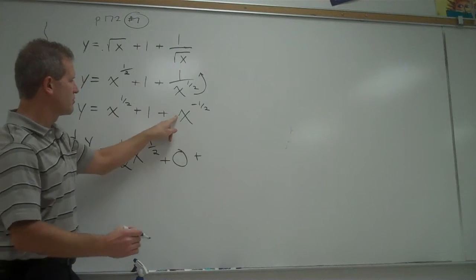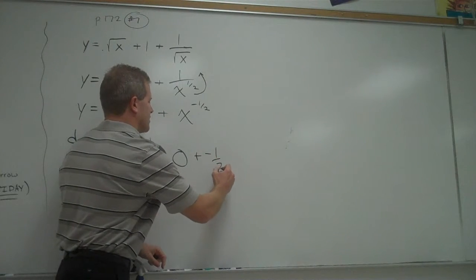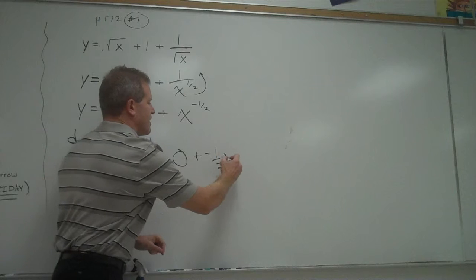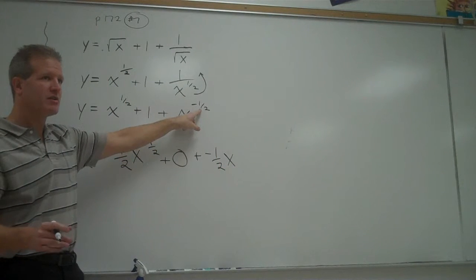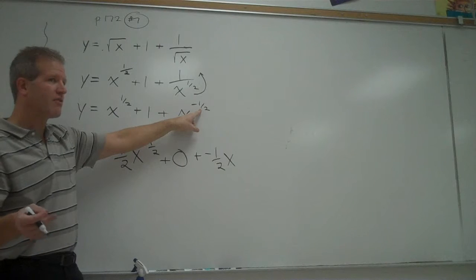Power rule here. Multiply by negative a half out front. Copy down the x. Subtract one off your exponent. Negative a half minus one would be negative one and a half or negative three halves.